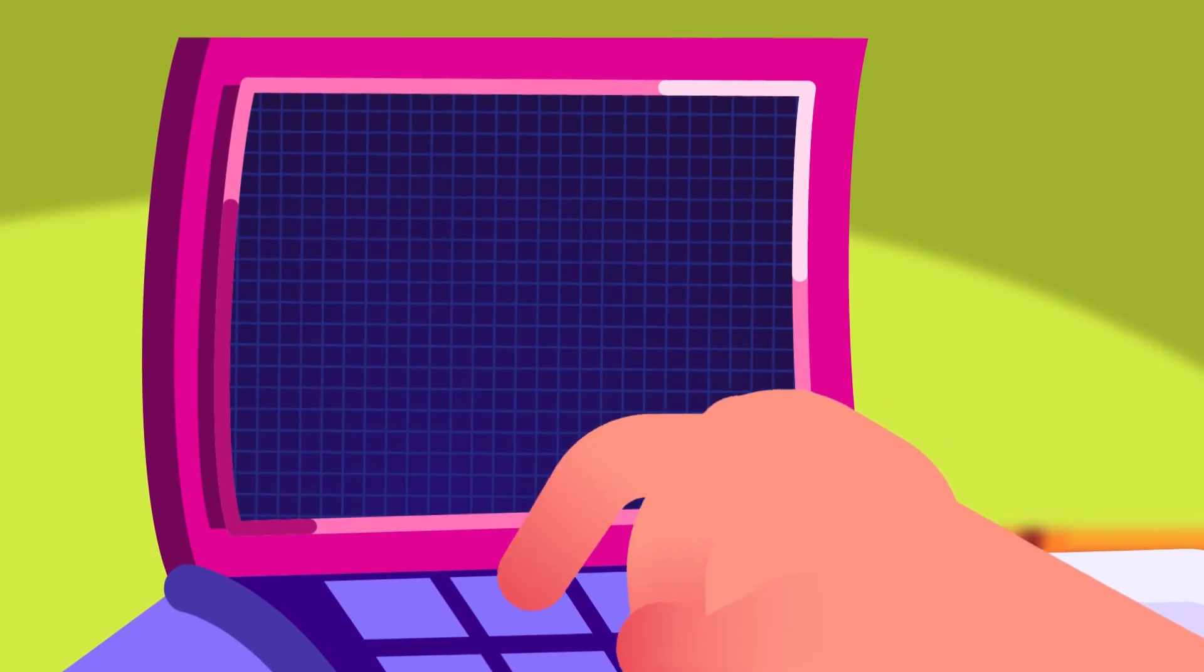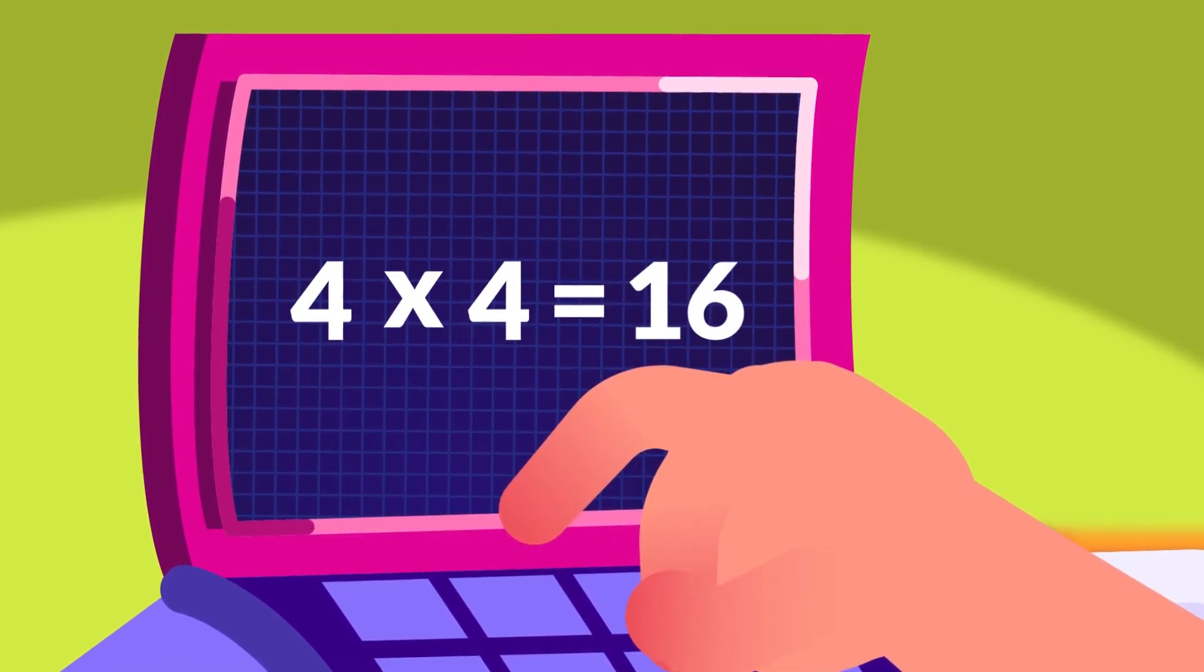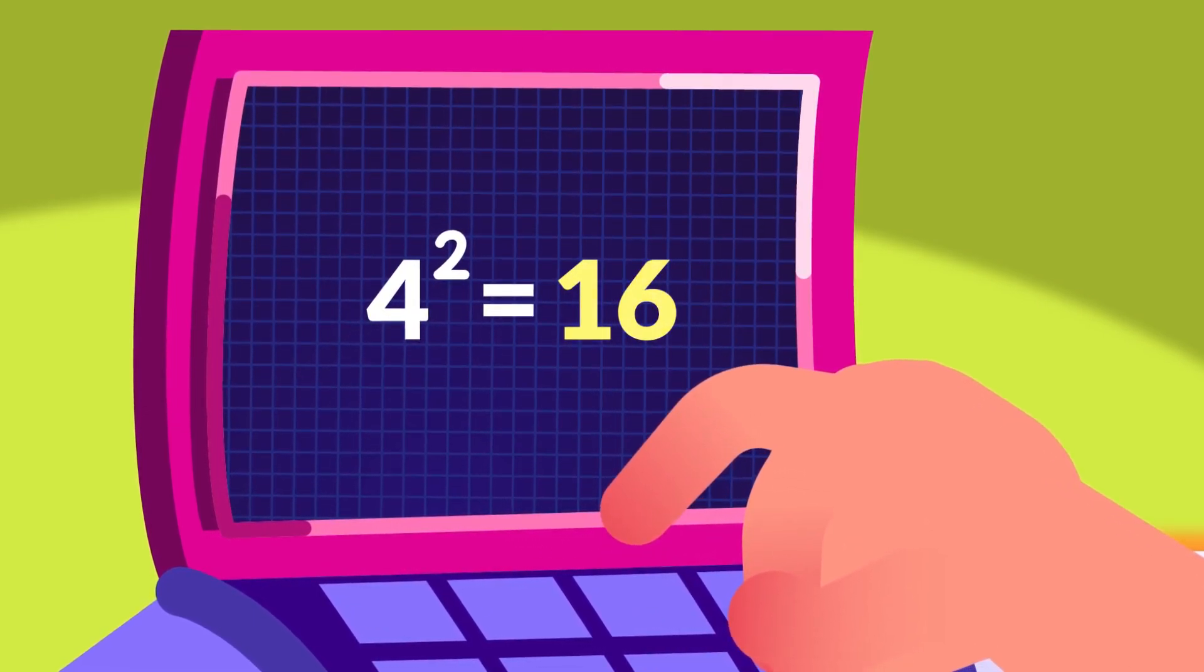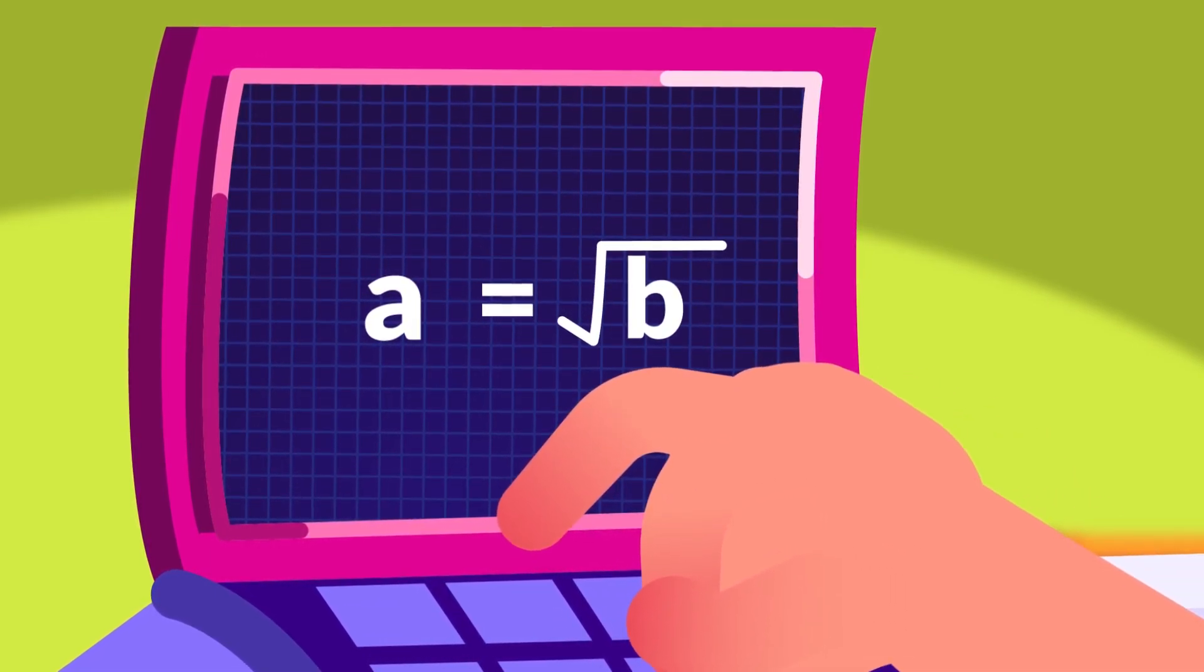Similarly, if we multiply 4 by itself, that is 4 by 4, the product will be 16. This can also be written as 4² = 16. We can say then that 16 is a square of 4.